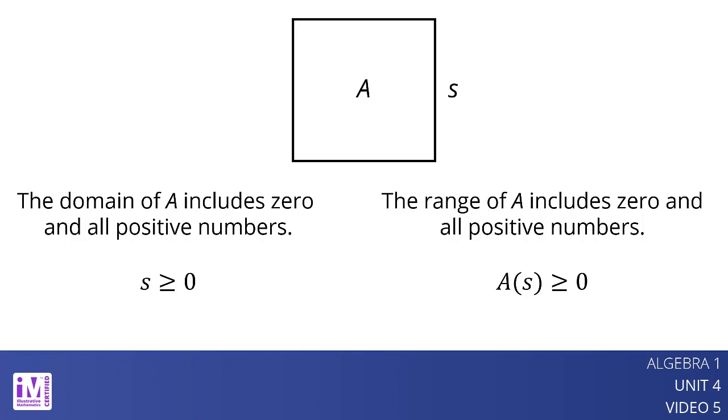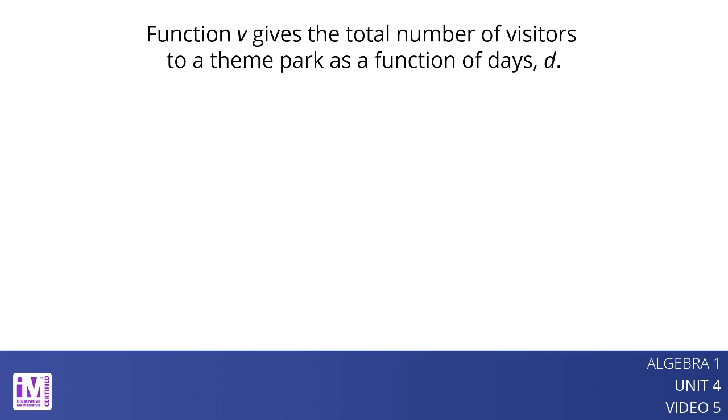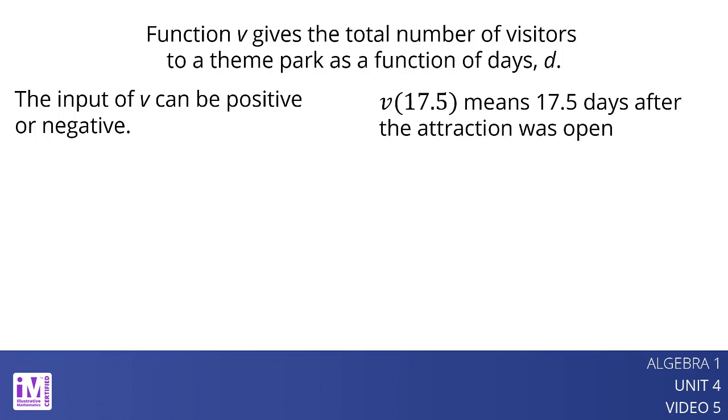Let's look at another example. Function V gives the total number of visitors to a theme park as a function of days, D, since a new attraction was open to the public. The input of V can be positive or negative. A positive input means days since the attraction was open, and a negative input days before the attraction was open. The input can also be whole numbers or fractional. The statement V of 17.5 means 17.5 days after the attraction was open. The domain of V includes all numbers.